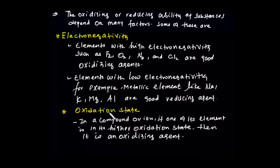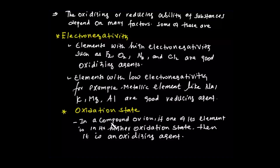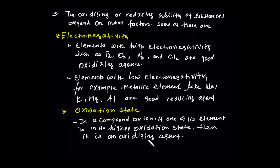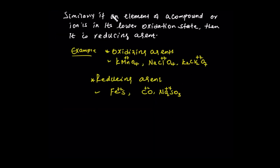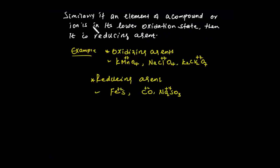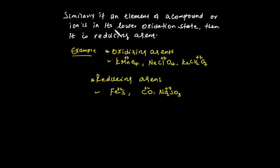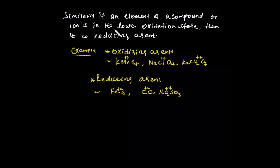Oxidation state also affects whether a substance is an oxidizing or reducing agent. If an element in a compound is in its high oxidation state, it is a good oxidizing agent. If an element in a compound is in its low oxidation state, then it is a good reducing agent.